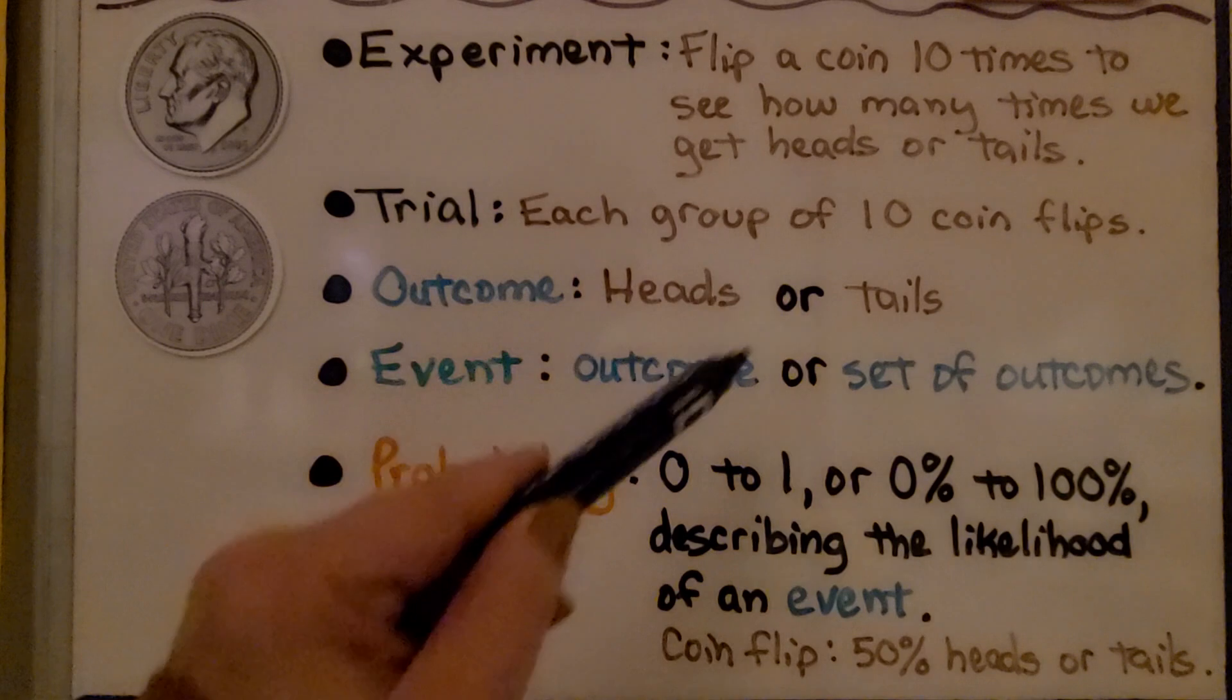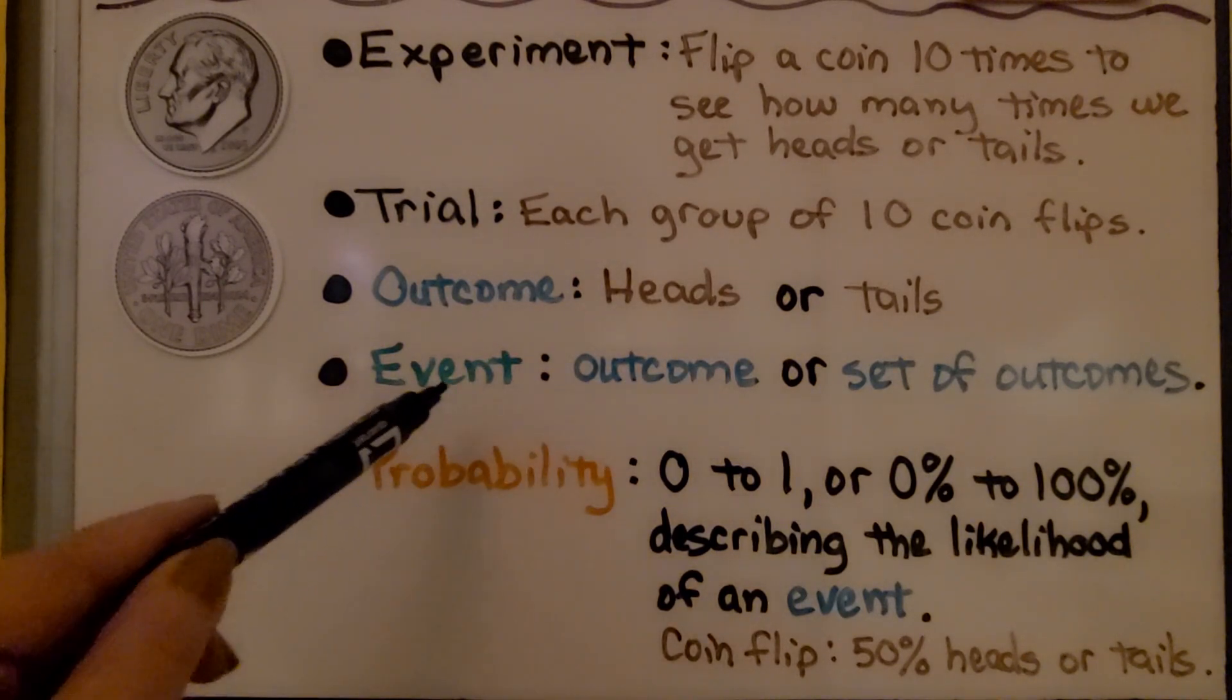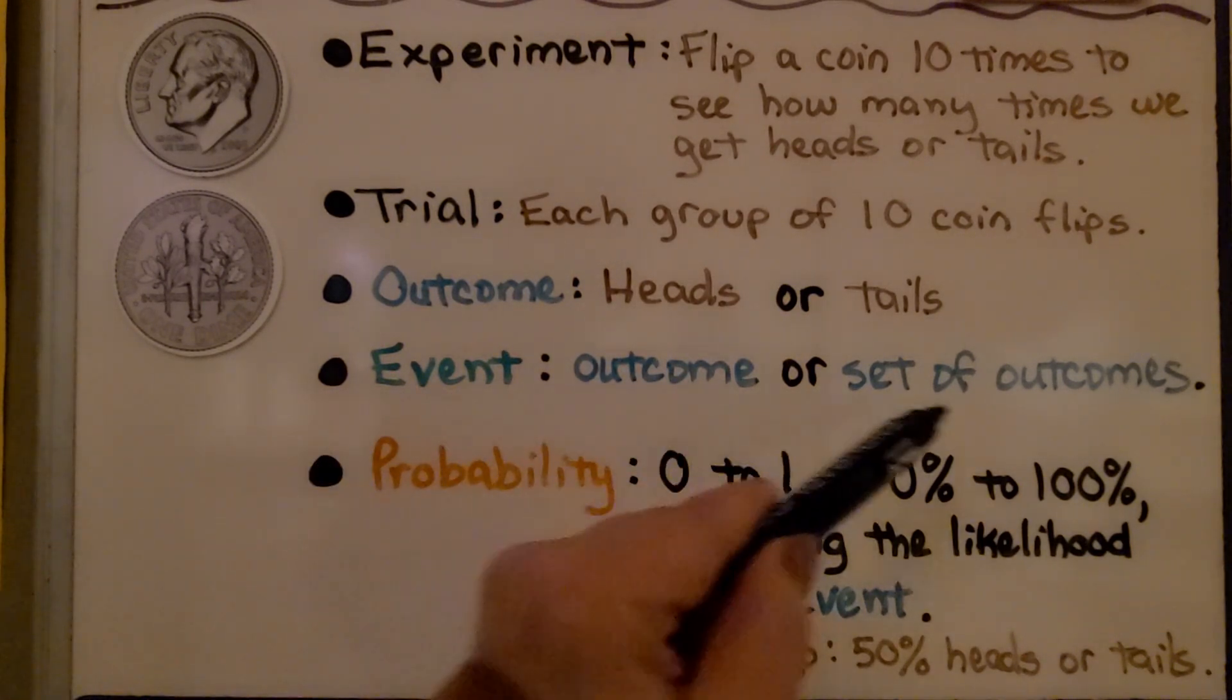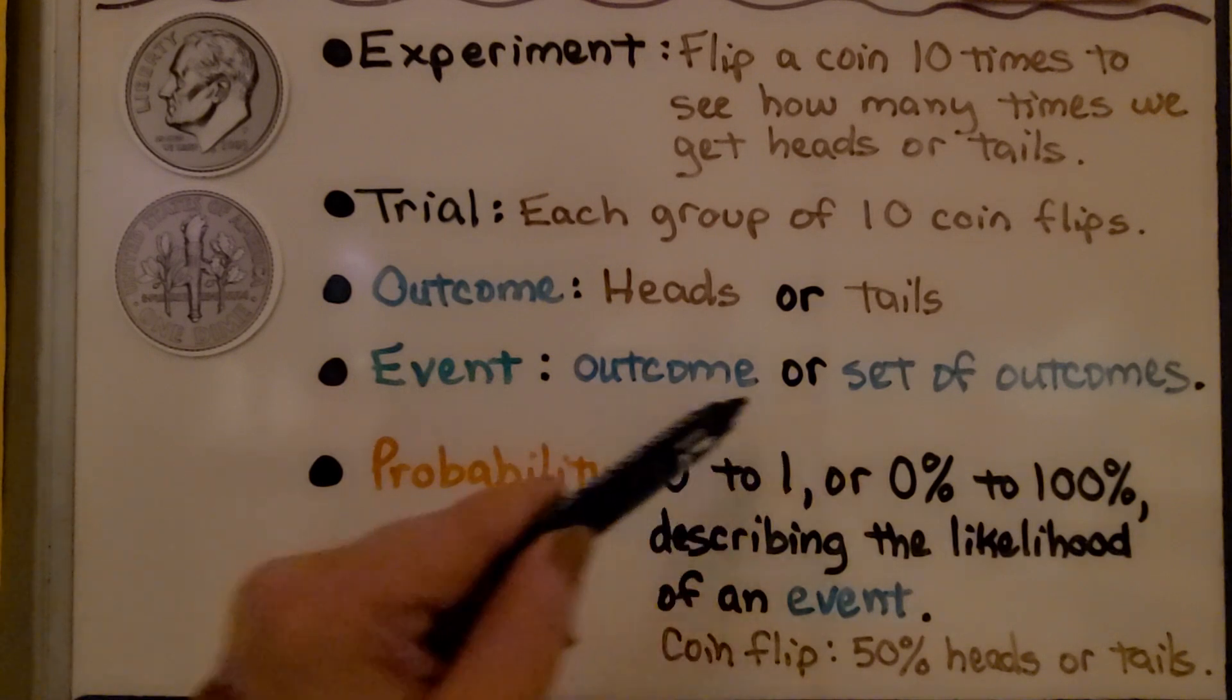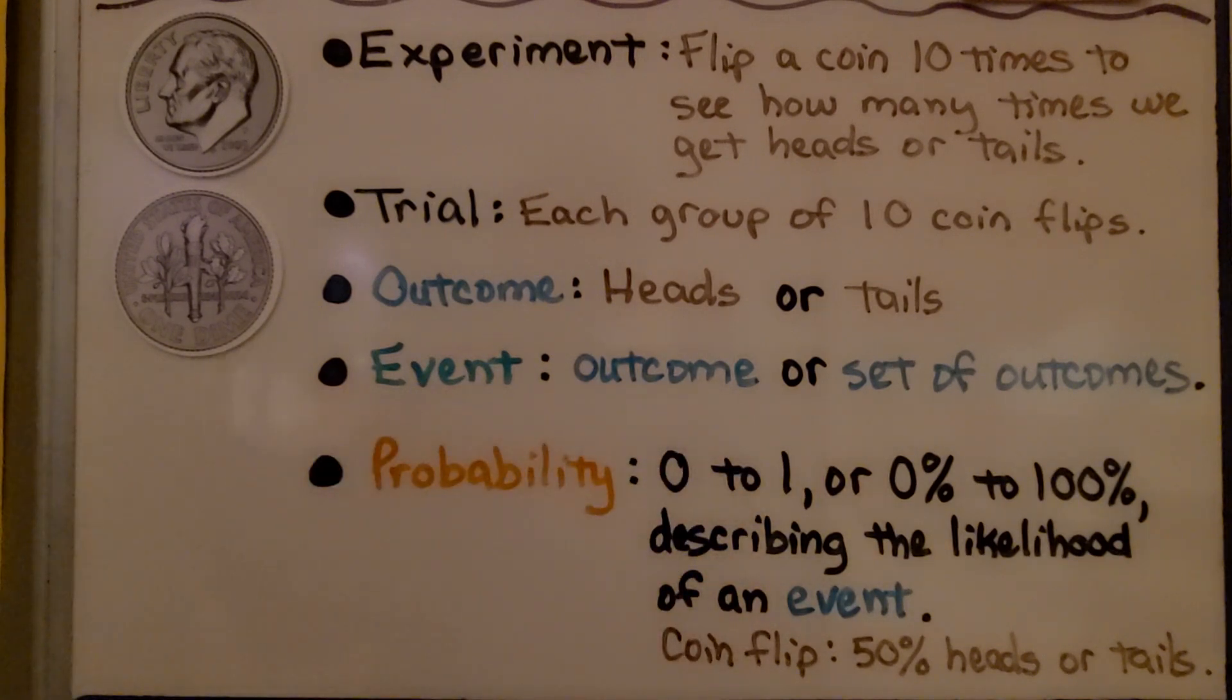The event would be the outcome or set of outcomes. So if we flipped it ten times, our set of outcomes would be all the heads or tails written down and transcribed as what happened. The probability would be from 0 to 1 or 0% to 100%, describing the likelihood of an event.